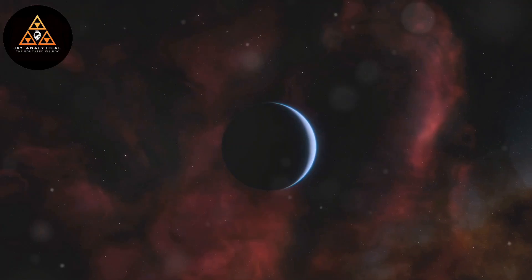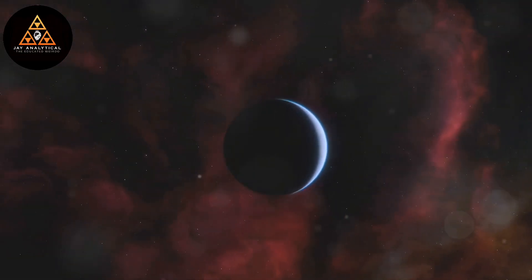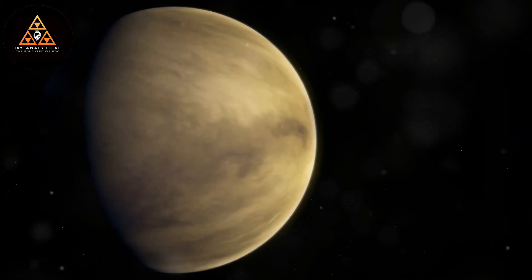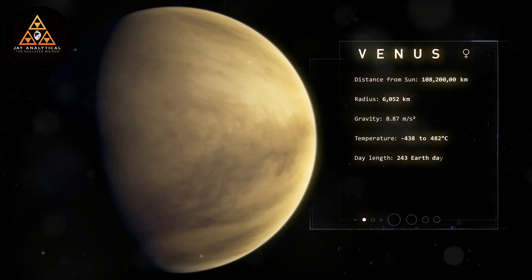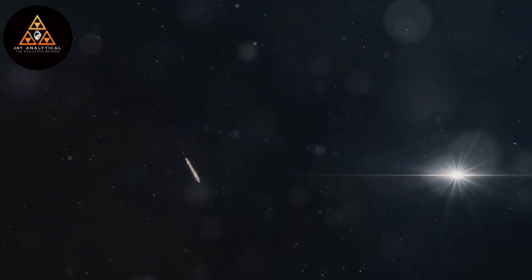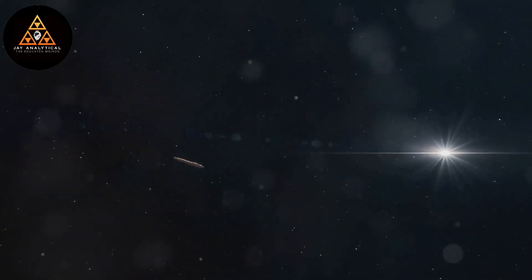We've found potentially habitable exoplanets and strange radio signals. Just last year, phosphine gas on Venus hinted at microbial life. And what about Oumuamua? Was it just an asteroid or something more?